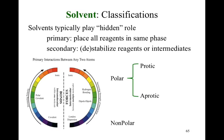On top of that, we have protic and aprotic. If we go back to polar and nonpolar — nonpolar means we're looking at nonpolar covalent bonds, so things with carbon and hydrogen. Our polar solvents would be things with oxygen, nitrogen, sulfur, or fluorine. Those tend to be our classic polar solvents.